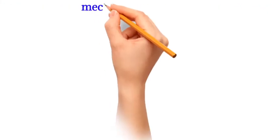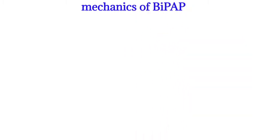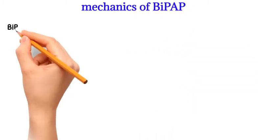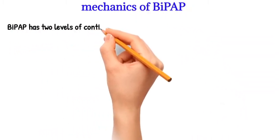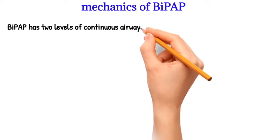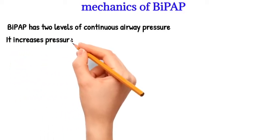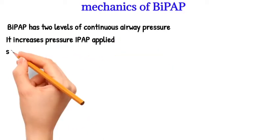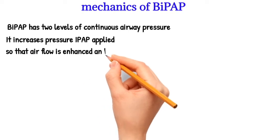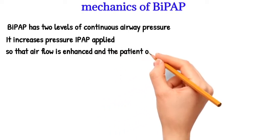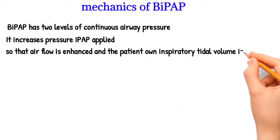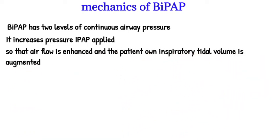Mechanics of BiPAP: BiPAP has two levels of continuous airway pressure. When the machine senses the patient's inspiratory flow starting to increase, it increases the pressure (IPAP) applied, so that airflow is enhanced and the patient's own inspiratory tidal volume is augmented.